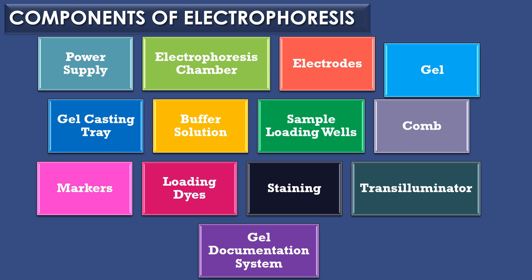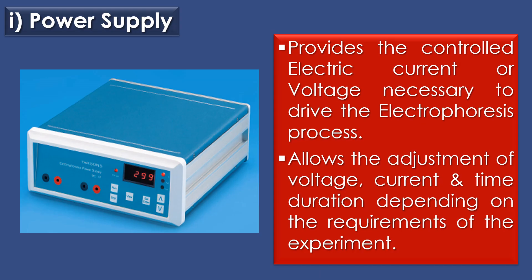Components of electrophoresis: there are 13 components of electrophoresis. The first component is power supply. The power supply provides the controlled electric current or voltage which is necessary to drive the electrophoresis process. It typically allows the adjustment of voltage, current, and time duration depending on the requirements of the experiment.